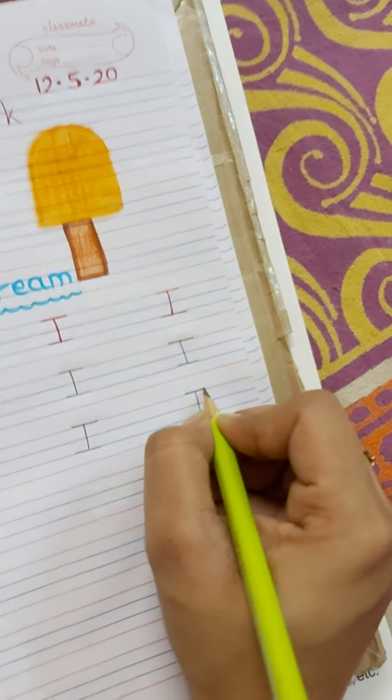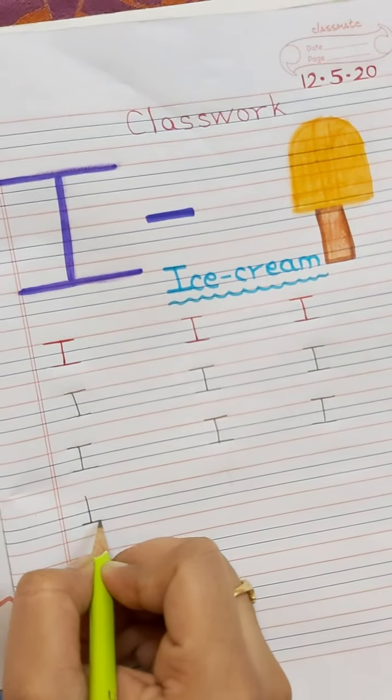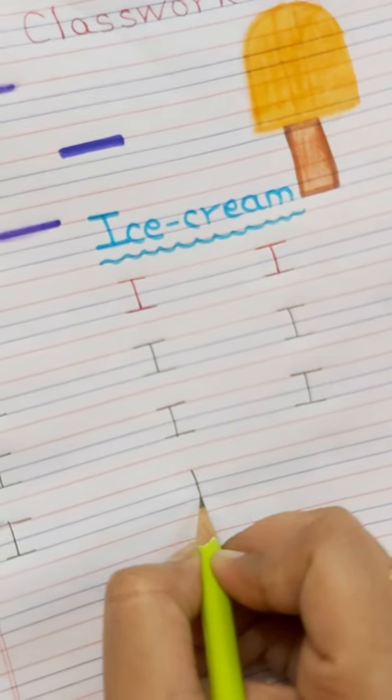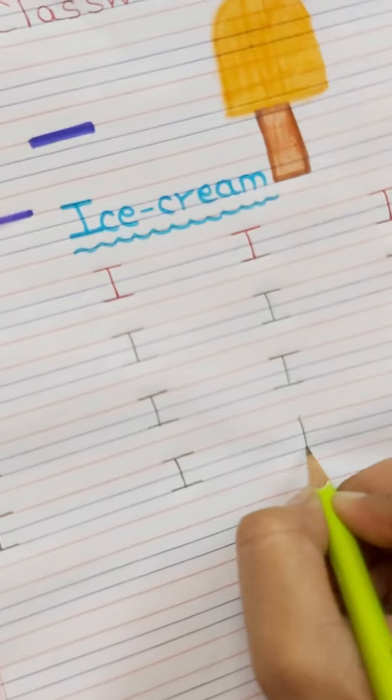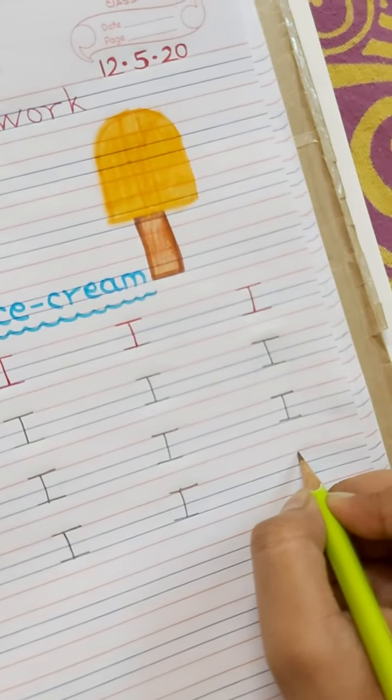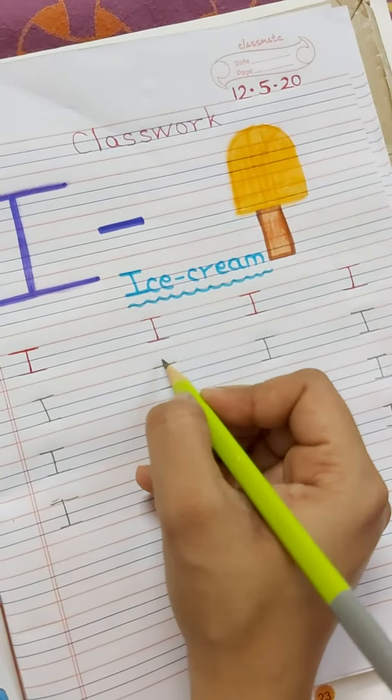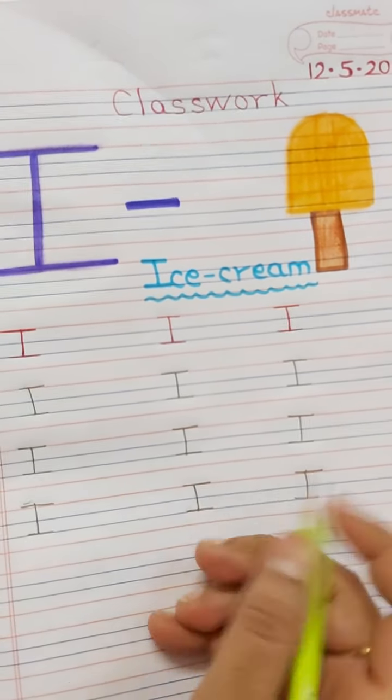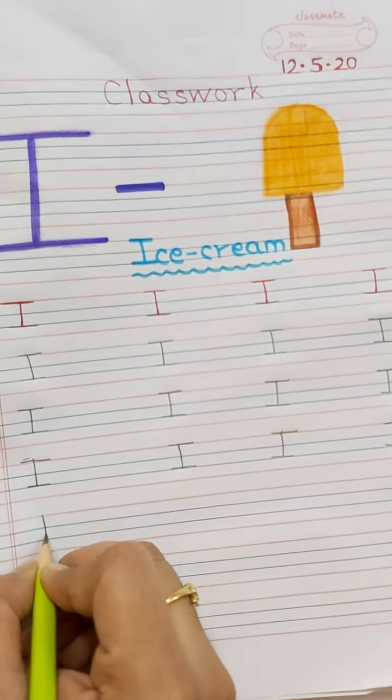Bita, aapko kaisa likhna hai? One thing very important. You don't have to touch the red line. Niche waali red line ko aapko bilkul bhi touch nahi karna hai. You have to write in three lines only. And the sleeping line should be small. This line should be small, not too big. Like this, you will write letter I.